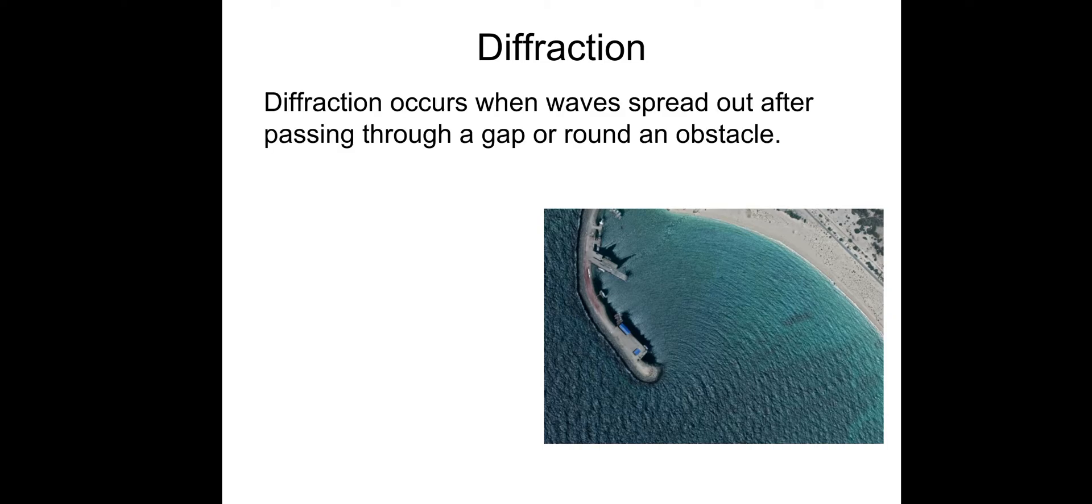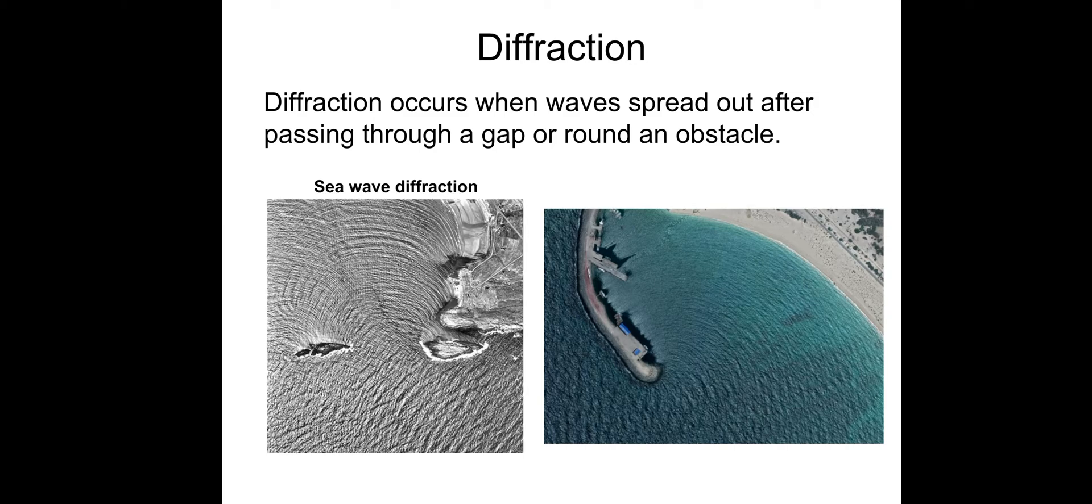So diffraction. Diffraction occurs when waves spread out after passing through a gap or around an obstacle. So there's two images here. See wave diffraction. As you can see, the waves come in. And we get kind of a diffraction pattern like this. You can see that on both photos. So that's just a pretty cool example of diffraction in real life.